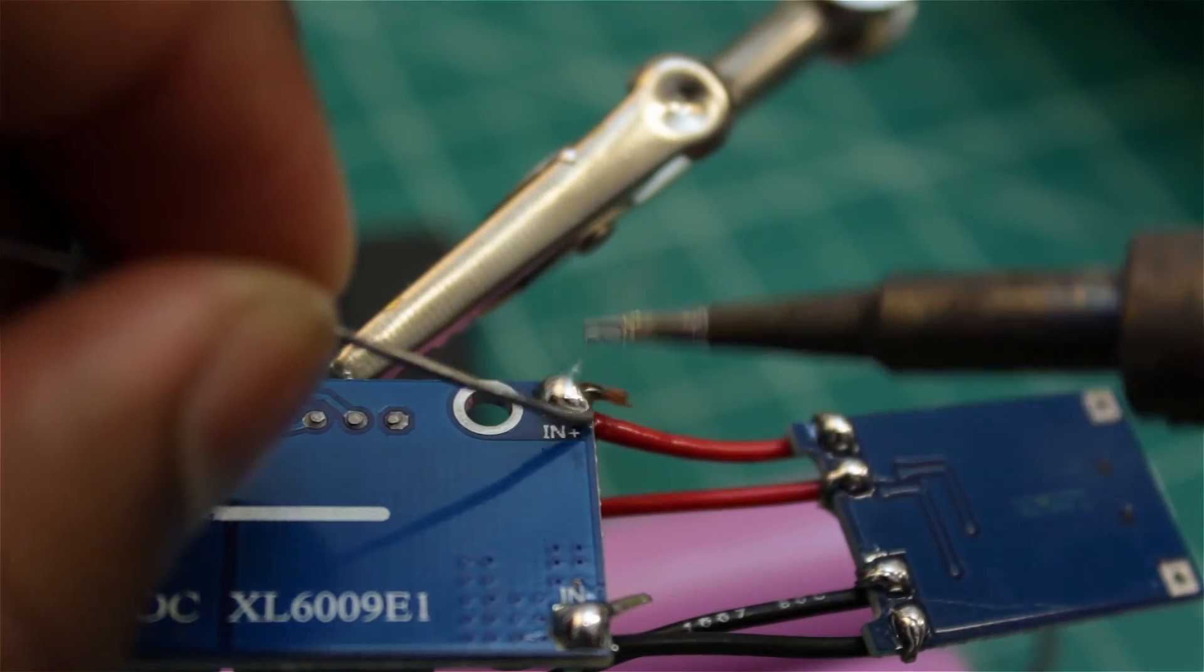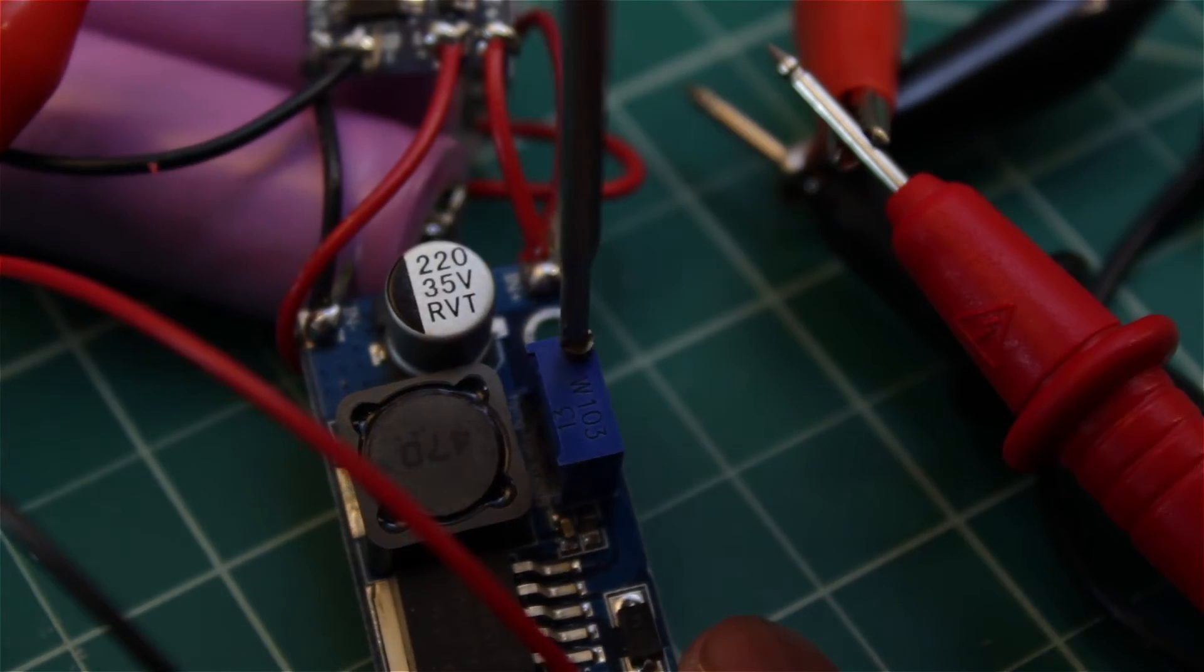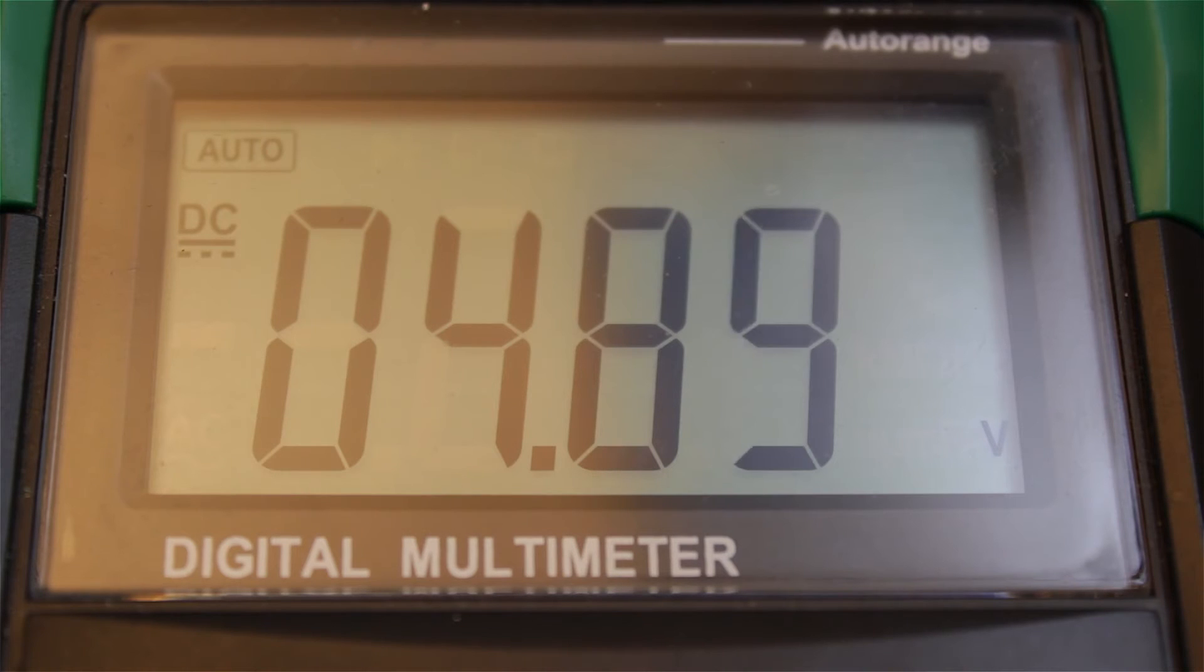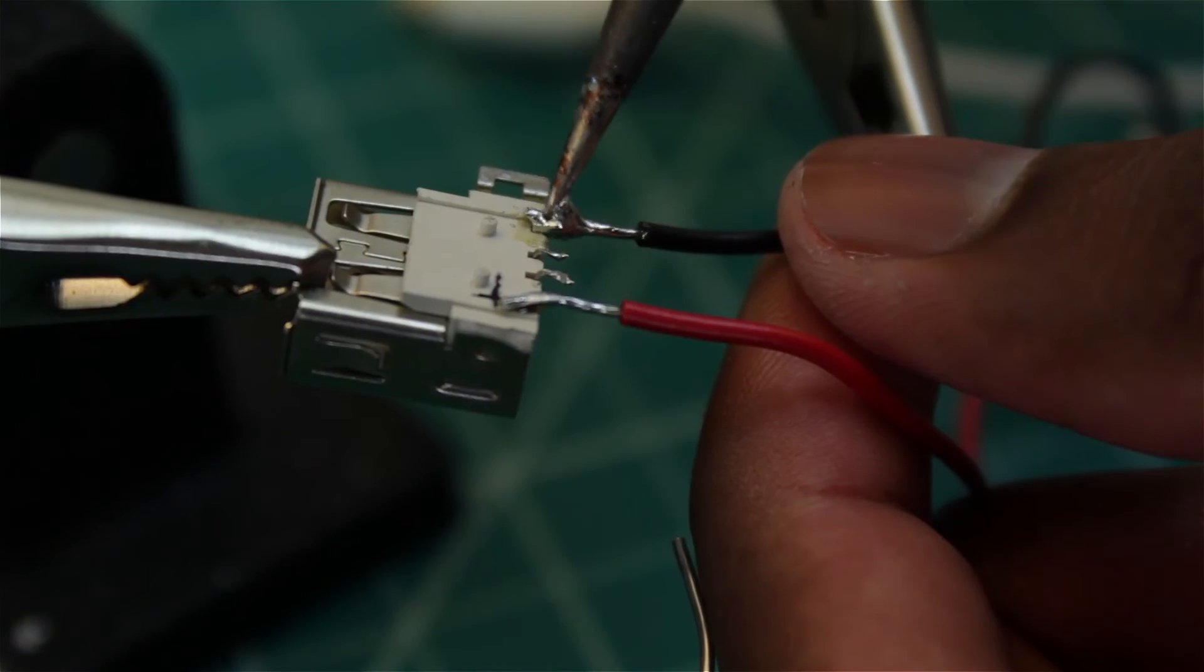Now connect the outputs of the boost converter to your voltmeter. Adjust the potentiometer until the voltage reads 5 volts. Then solder the outputs to your USB 2.0 port.